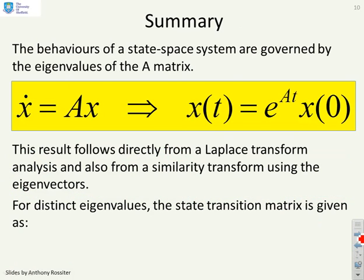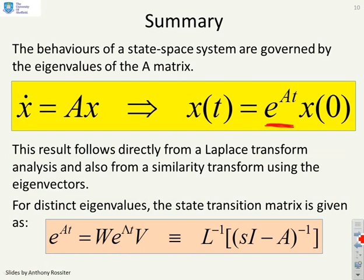So a summary. The behaviors of a state-space system are governed by the eigenvalues of the A matrix, and you can find a state transition matrix e to the At. And what we've shown is that if you've got distinct eigenvalues, e to the At can be written as this. A matrix of the eigenvectors W times a diagonal matrix e to the lambda t, where lambda has the eigenvalues, multiplied by the right eigenvectors V.